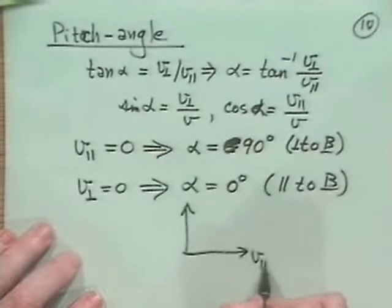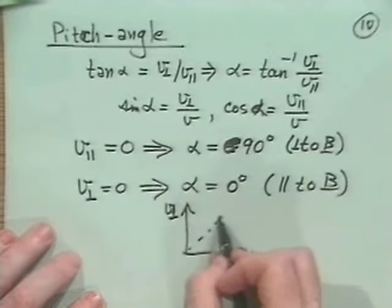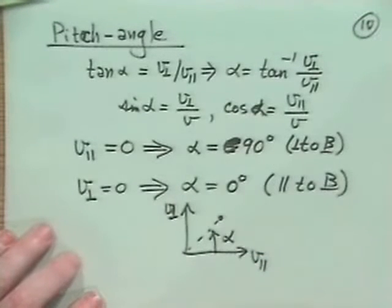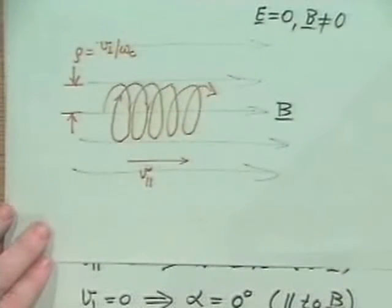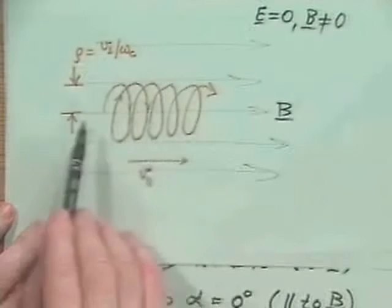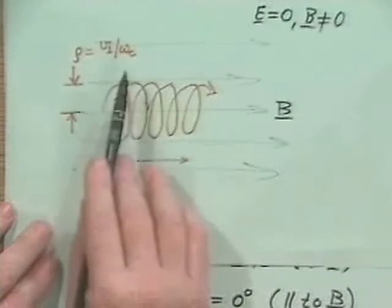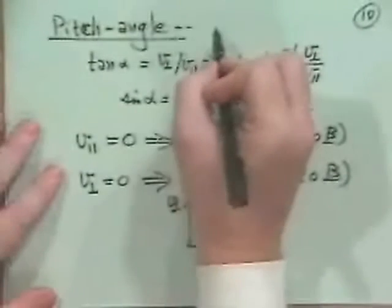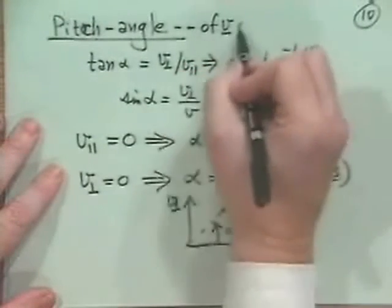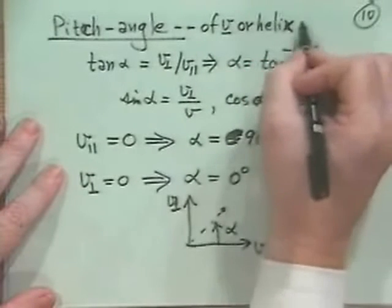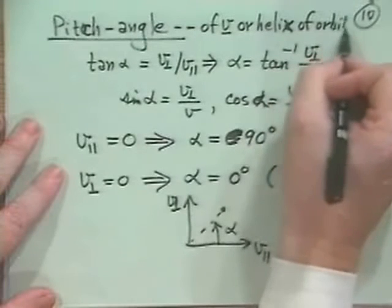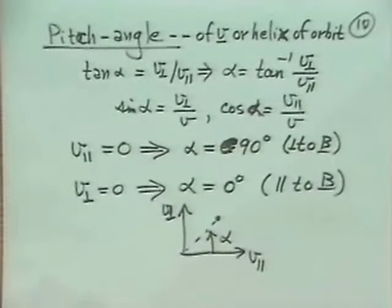So often, then, what we will end up doing is we'll have a V parallel and a V perp, and we'll think of a particle being here, and there's this pitch angle alpha, which is then where we are in direction, but notice that that is also the pitch of this helix. Because if I have only V parallel, I'll move straight along field line, I won't even have any gyro motion, or on the other hand, if I have V parallel equals 0, I'll be purely perpendicular. So this is of the velocity V or the helix of the orbit.